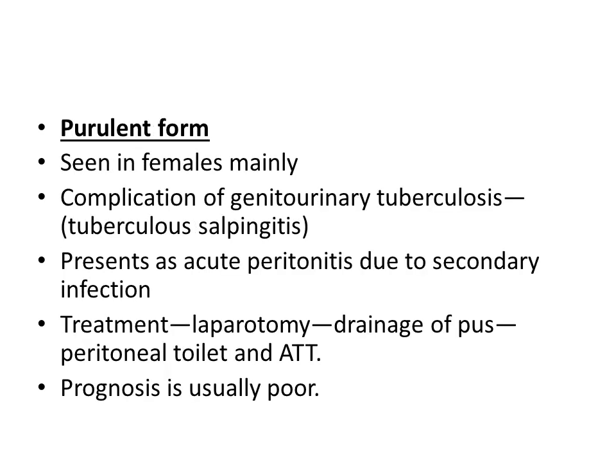The purulent form is seen mainly in females and is a complication of genitourinary tuberculosis. Tubercular salpingitis presents as acute peritonitis due to secondary infection. Treatment is laparotomy, drainage of pus, peritoneal toilet, and then anti-tubercular therapy is started.